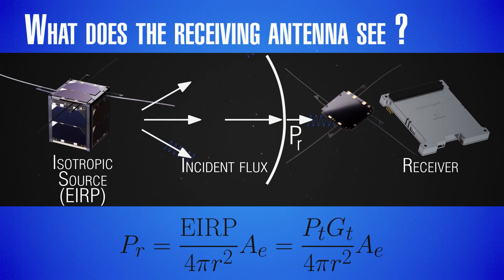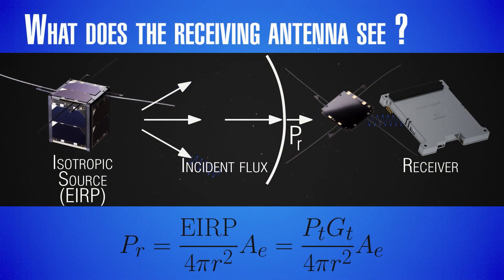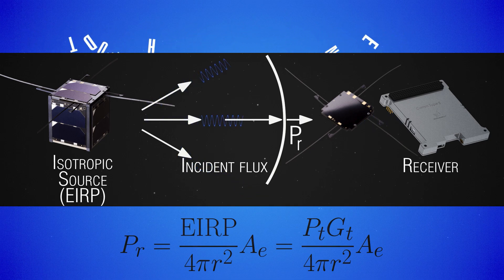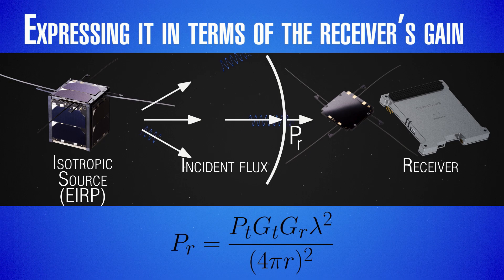There is a very nice way of writing this in terms of antenna properties, by recalling that the effective area is connected to the gain. Since directivity is defined as the surface area divided by λ², we can substitute the effective area of the receiver with the receiver's gain, accounting for its losses. Substituting in terms of both the receiver and transmitter gains, we get a simple formula: the received power equals the transmitted power times the transmitter gain times the receiver gain times the square of the wavelength, divided by (4πr)².